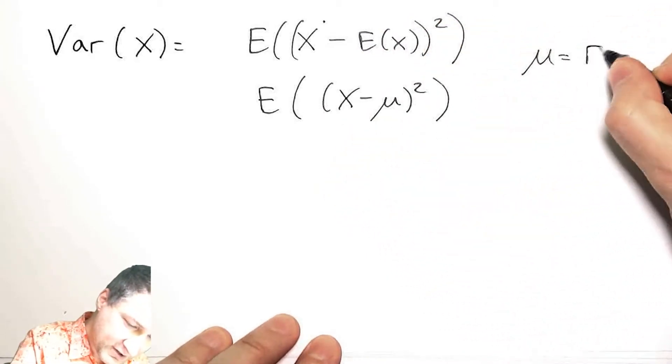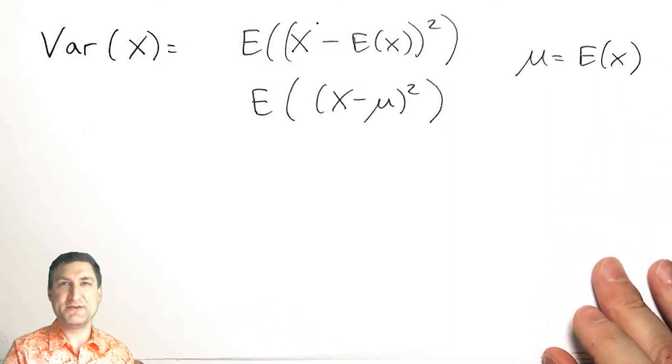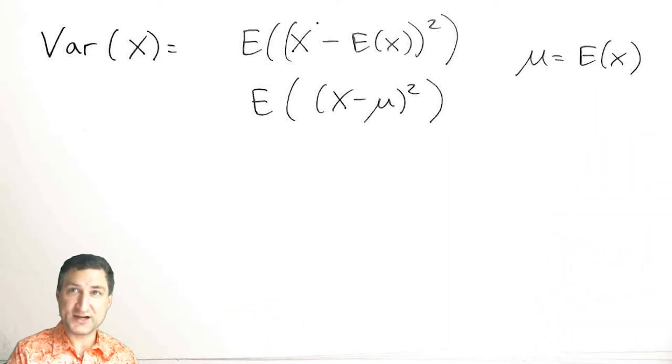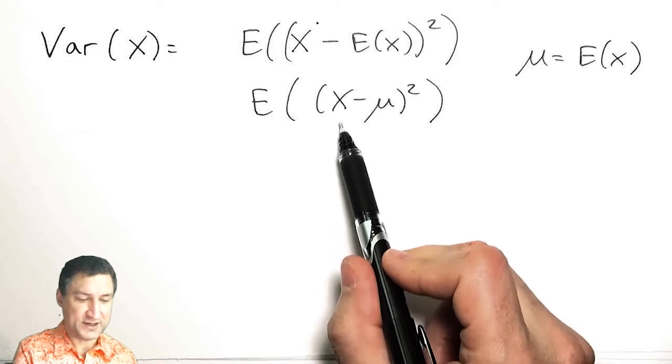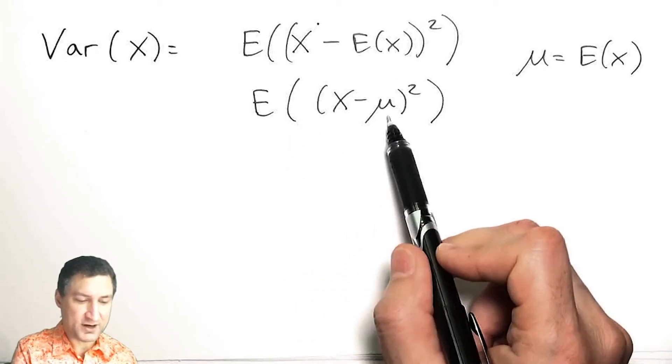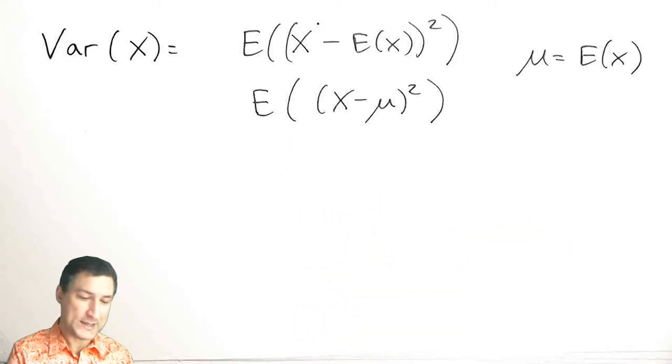Sometimes you see this notation mu = E(X). Maybe this is easier to understand. Mu is a constant. I'm just asking, what's the expected value of how far away X is from that constant? I square it so I always get a positive number.